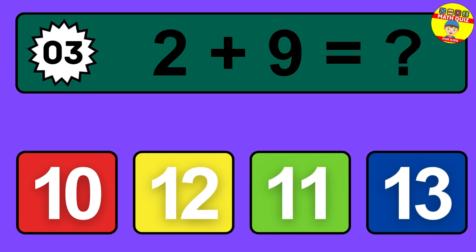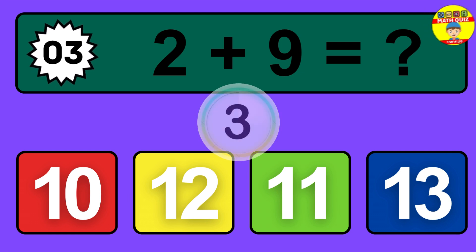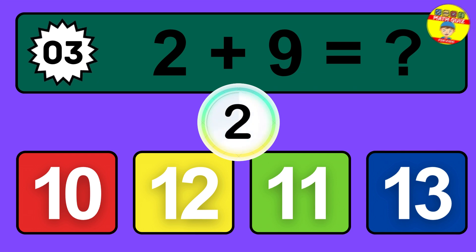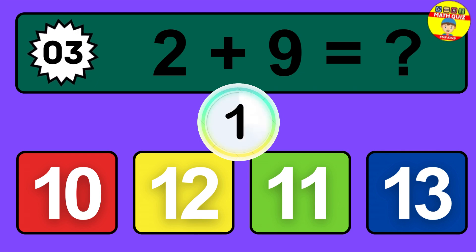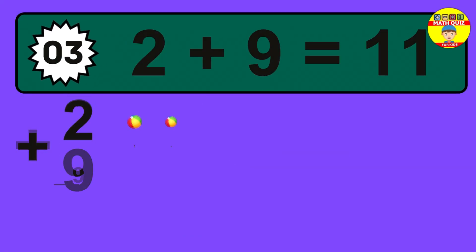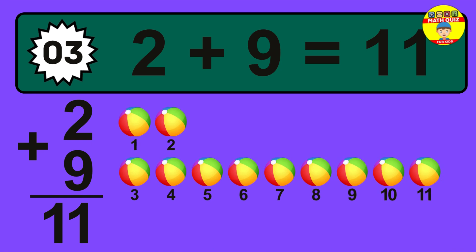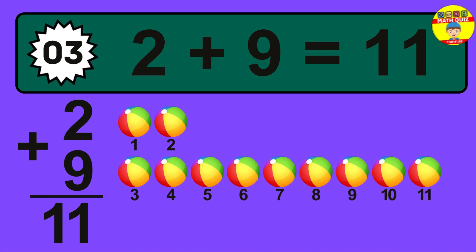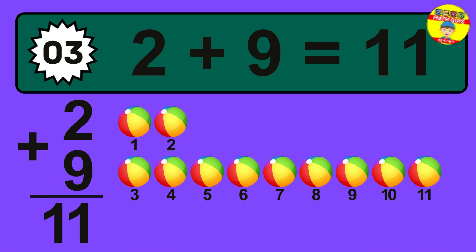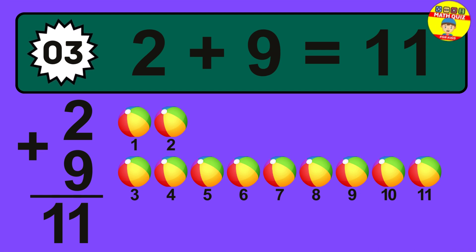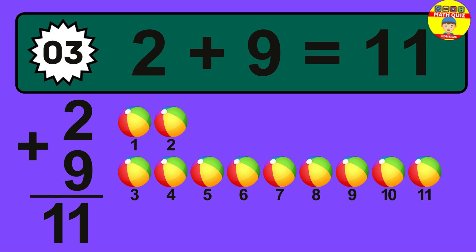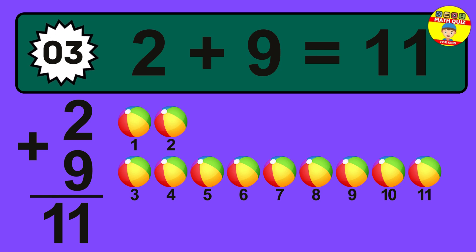Question 3. 2 plus 9 equals what? The answer is 2 plus 9 is 11. Let's count it: 1, 2, 3, 4, 5, 6, 7, 8, 9, 10, 11.